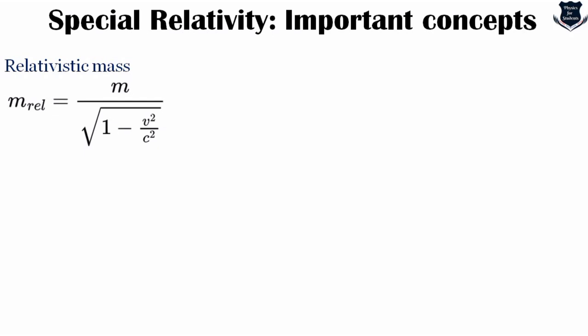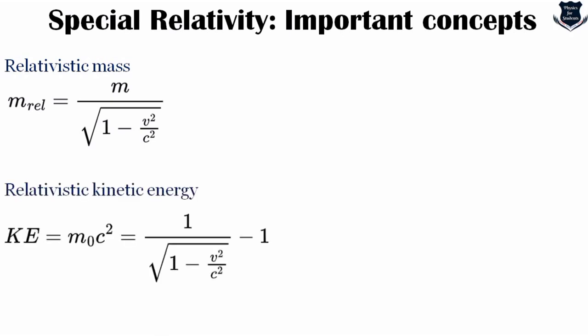Relativistic mass: the word mass has two meanings in special relativity. Invariant mass, also called rest mass, is an invariant quantity the same for all observers in all frames. Relativistic mass depends on the velocity of the observer. According to mass-energy equivalence, invariant mass is equivalent to rest energy while relativistic mass is equivalent to relativistic energy. Relativistic kinetic energy essentially defines the kinetic energy of a particle as the excess of the particle energy over its rest mass energy; for low velocities it approaches the non-relativistic kinetic expression.